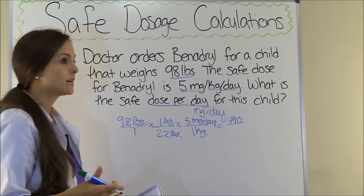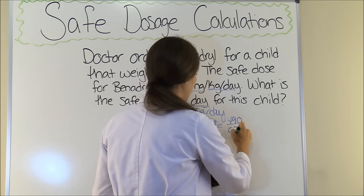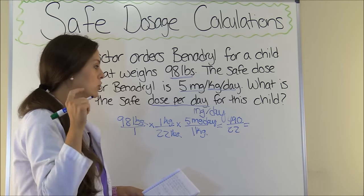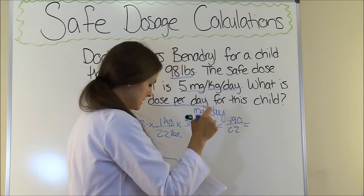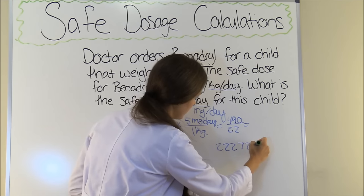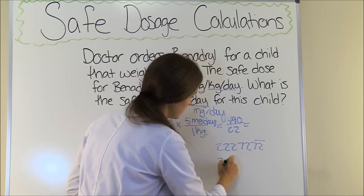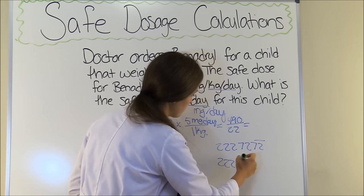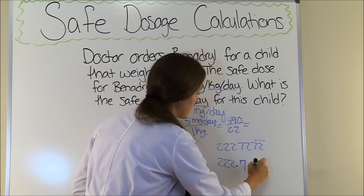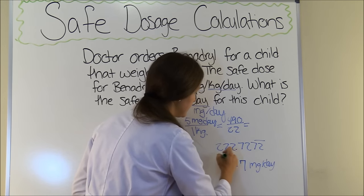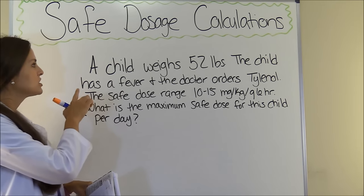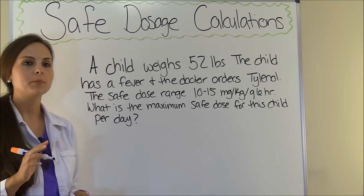And 1 × 2.2 × 1 = 2.2. Then 490 ÷ 2.2 = 222.7 (repeating), which we round to 222.7 milligrams per day. That is our answer for Problem 1. Now, Problem 2: a child weighs 52 pounds, has a fever, and the doctor has ordered Tylenol.